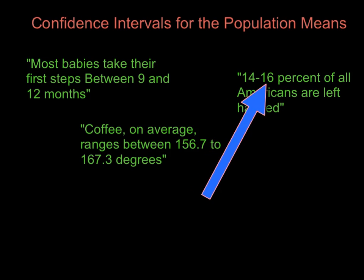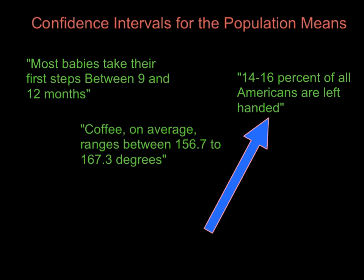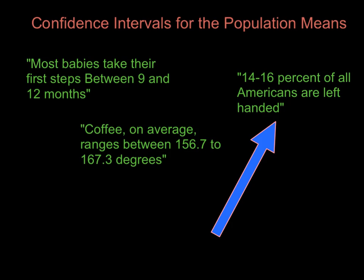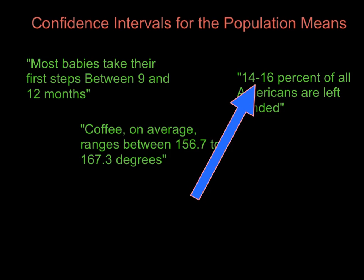Same thing here for a proportion or a percent. They took a sample of Americans and found out what percent of their sample was left-handed and then they expanded that to say, well, the population of all Americans is somewhere between these two numbers.